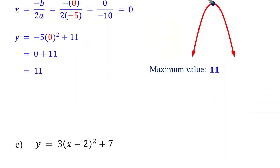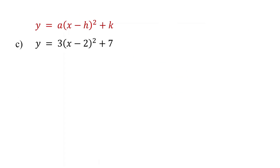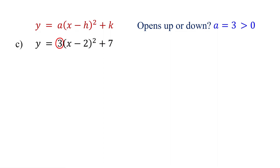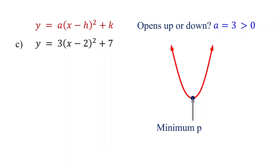Let's see now when a quadratic function is given in vertex form. Also in this case, first determine whether the parabola opens upward or downward based on the sign of a. If a is greater than 0, the parabola opens upward. If a is less than 0, the parabola opens downward. In our example, a is 3, which is greater than 0, so the parabola opens upward. Therefore, the quadratic function has a minimum point, which is the vertex.